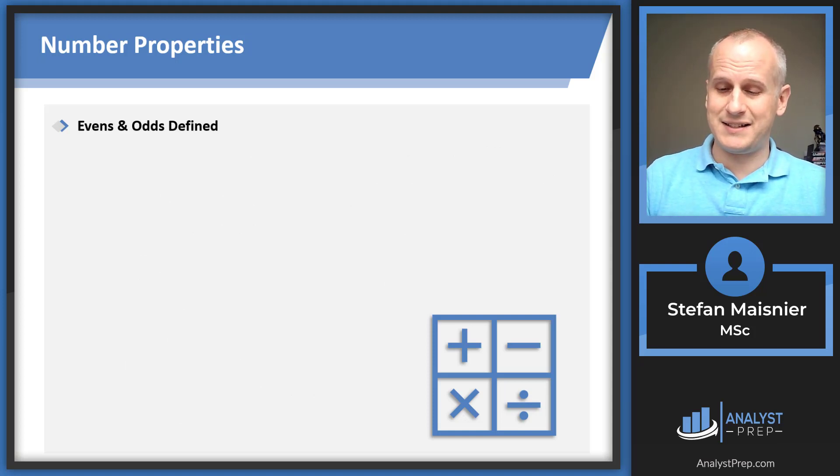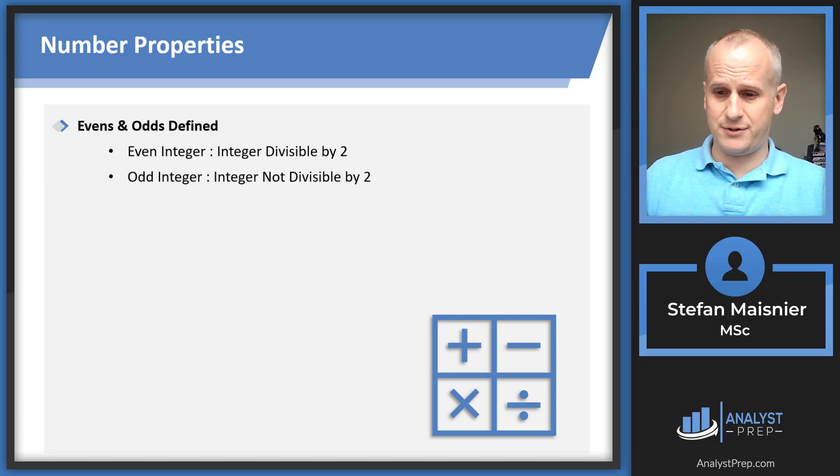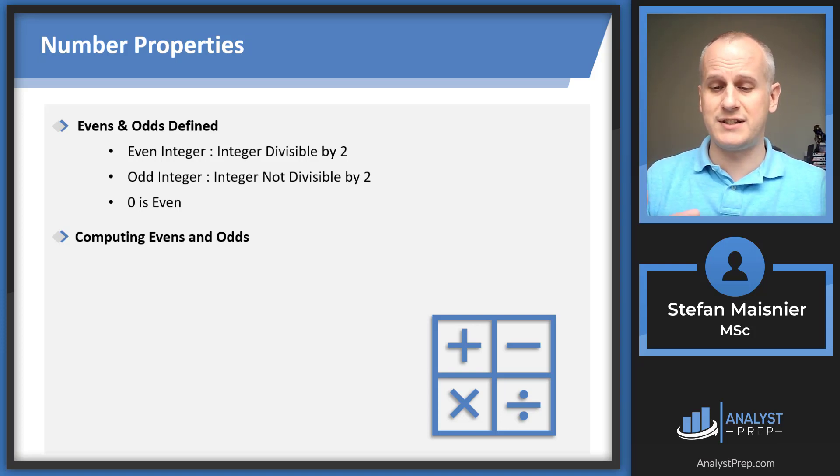Now let's talk about evens and odds, because this is a concept that the exam really likes to leverage. An even integer technically is just going to be an integer that is divisible by two. An odd integer is going to be an integer not divisible by two. Math is often defined by what isn't true as much as what is. An odd integer is not every multiple of three, for instance, because six is a multiple of three, but it's also multiple of two. So six would be even, not odd. Recognize odd technically means not divisible by two. Zero technically is even because if you divide zero by two, you have no remainder. When you compute evens and odds using your four basic functions, there are some rules that you can commit to memory.